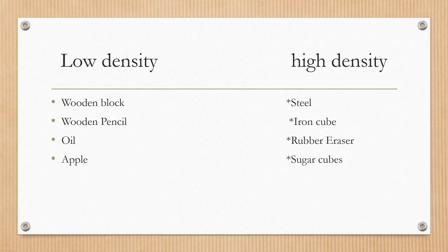These are other examples of objects that have lower or higher density than water. For example, a wooden block, even the wooden pencil, oil, apple, they will have a lower density. What will happen if they have low density? They will float. The objects that have higher density could be steel, the iron cube, rubber eraser, sugar cubes. What will happen if they have high density? Well, if I put them in water, they will sink.